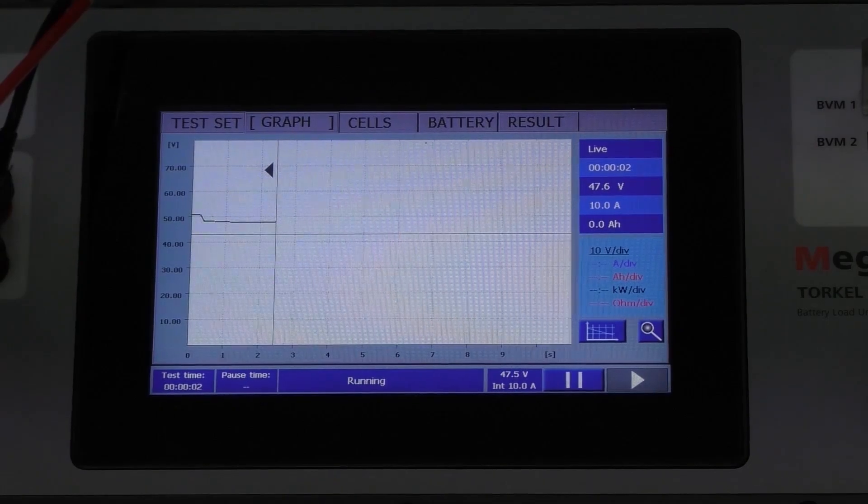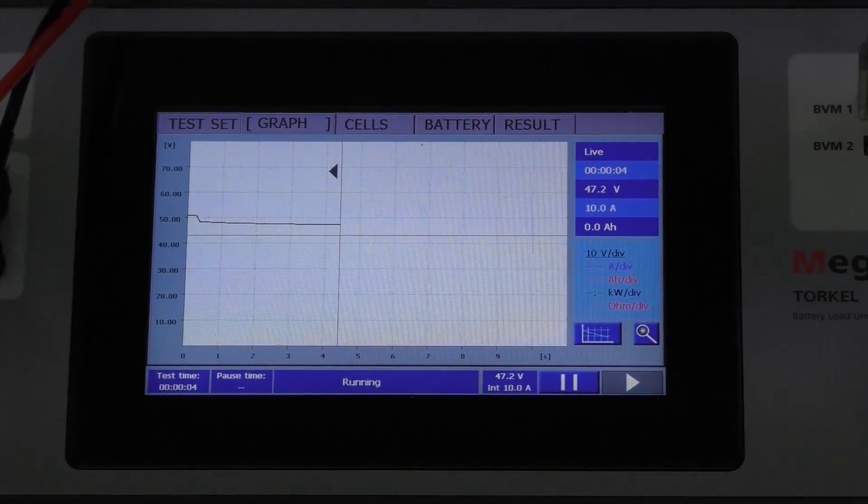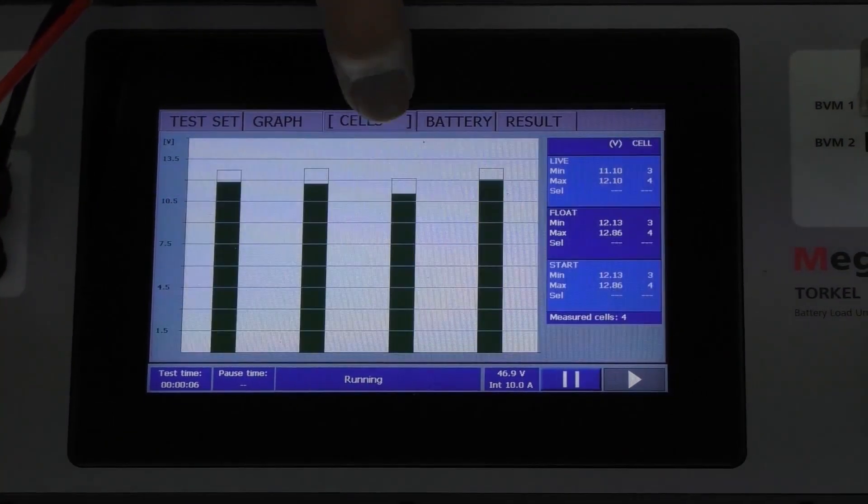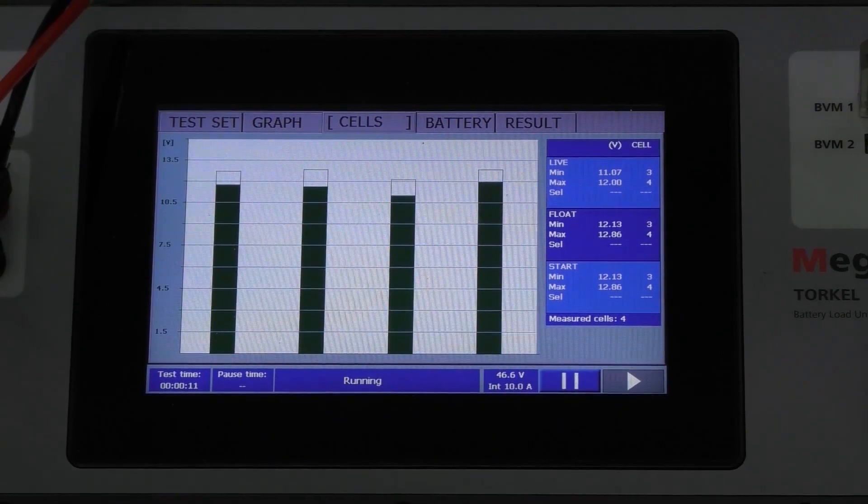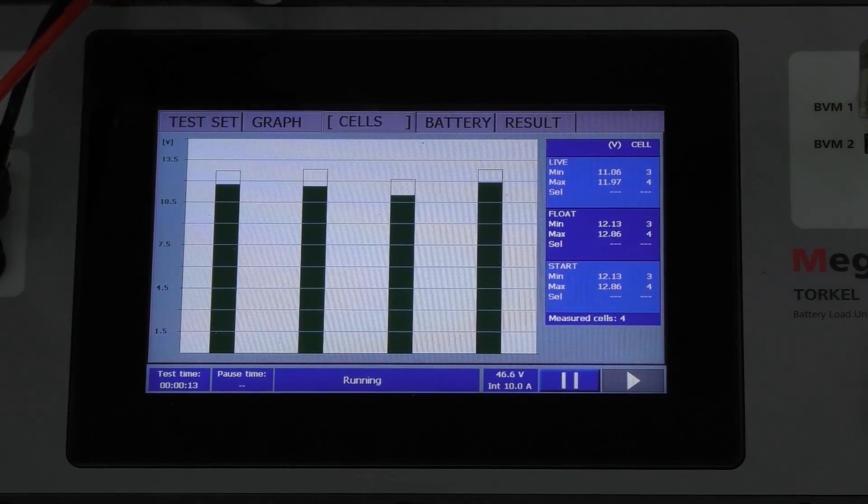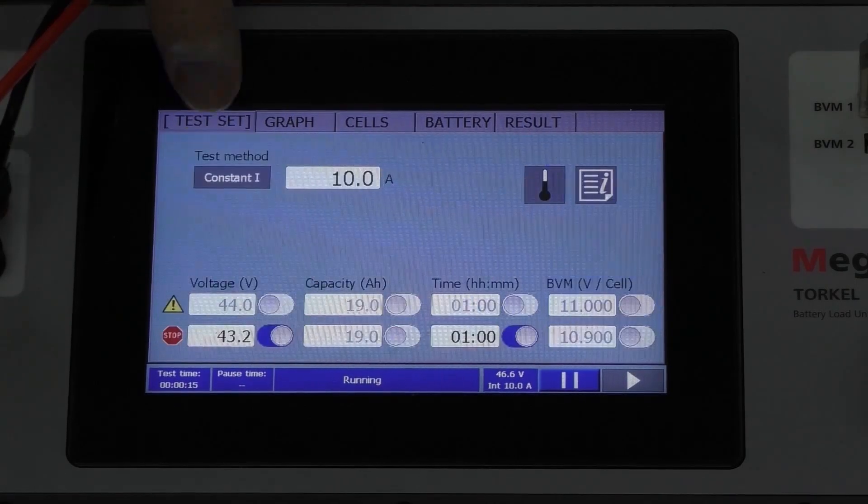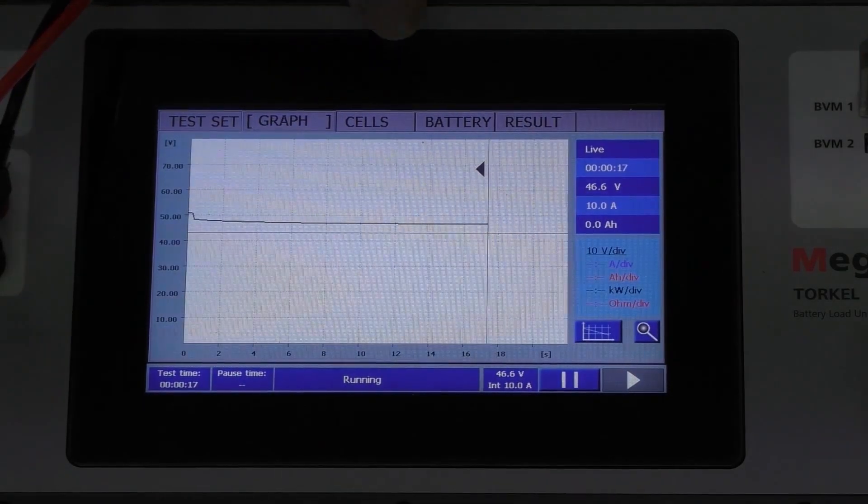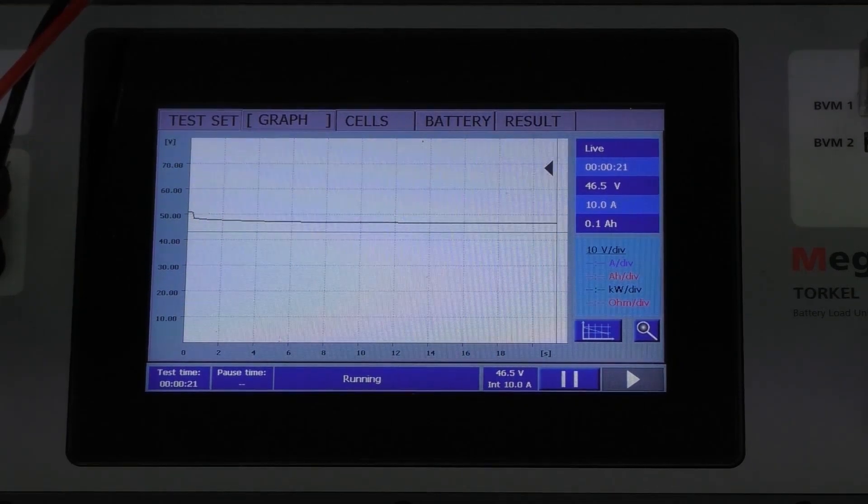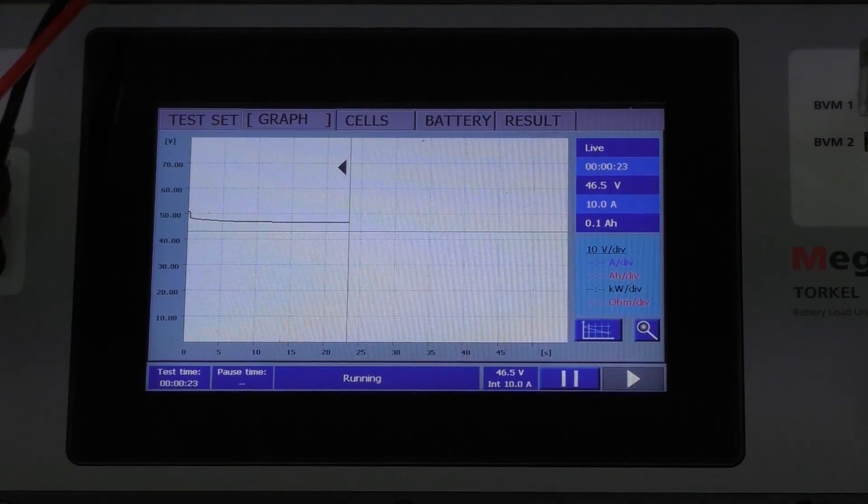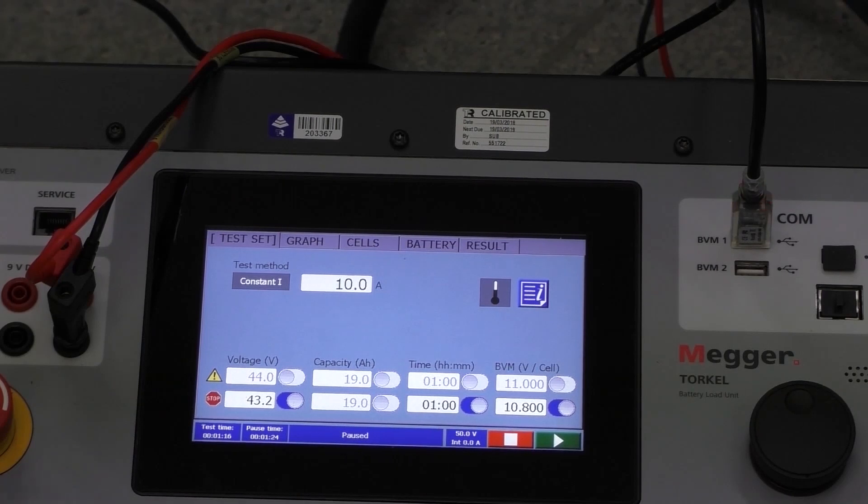And here is the voltage graph as it's occurring. And here is the cells. Now we're drawing 10 amps according to the external current. And we can see how the test is going back here. There's the graph of it. And we now leave it for one hour and we come back in an hour and see how it's gone.